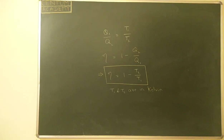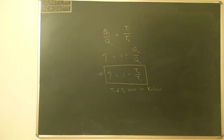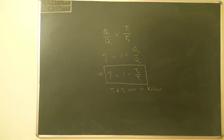We have derived that Q1/Q2 = T1/T2. Since efficiency = 1 − Q2/Q1, substituting gives efficiency = 1 − T2/T1. We now have efficiency expressed in terms of temperatures. Remember to use temperature in Kelvin — convert from degrees Celsius if needed. T2 is the lower temperature and T1 is the higher temperature; if T2 were higher, efficiency would be negative, which is physically meaningless.